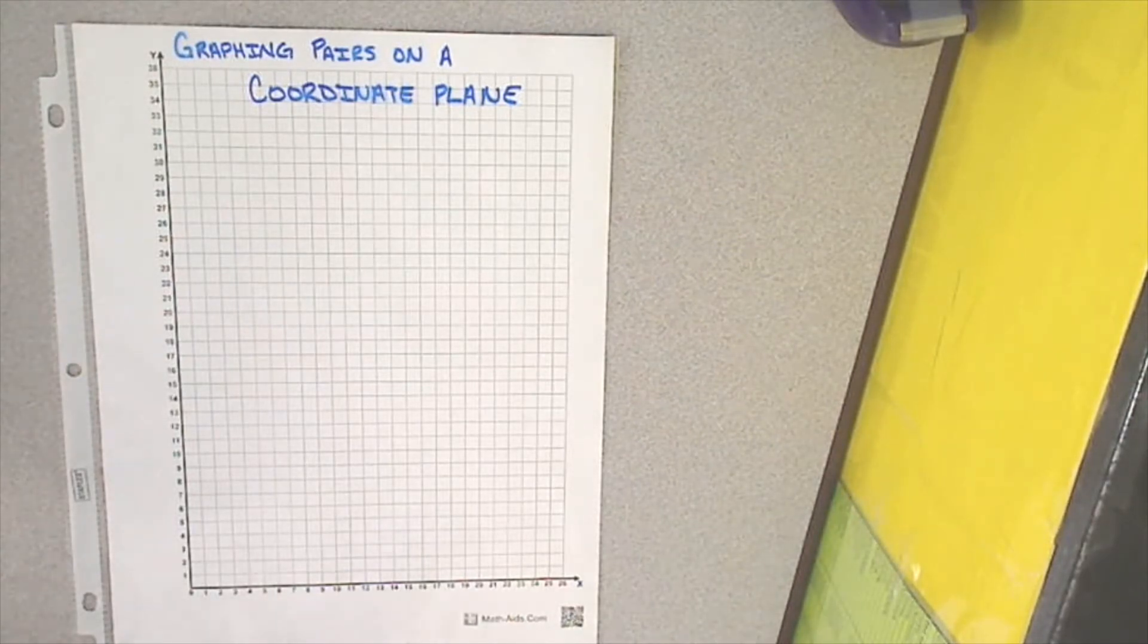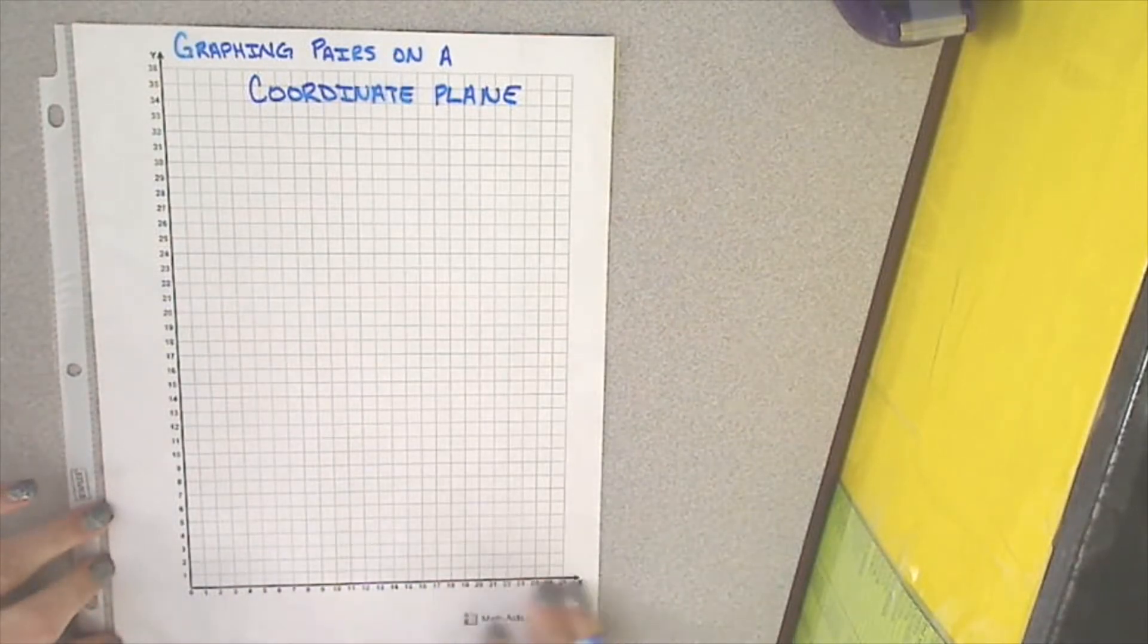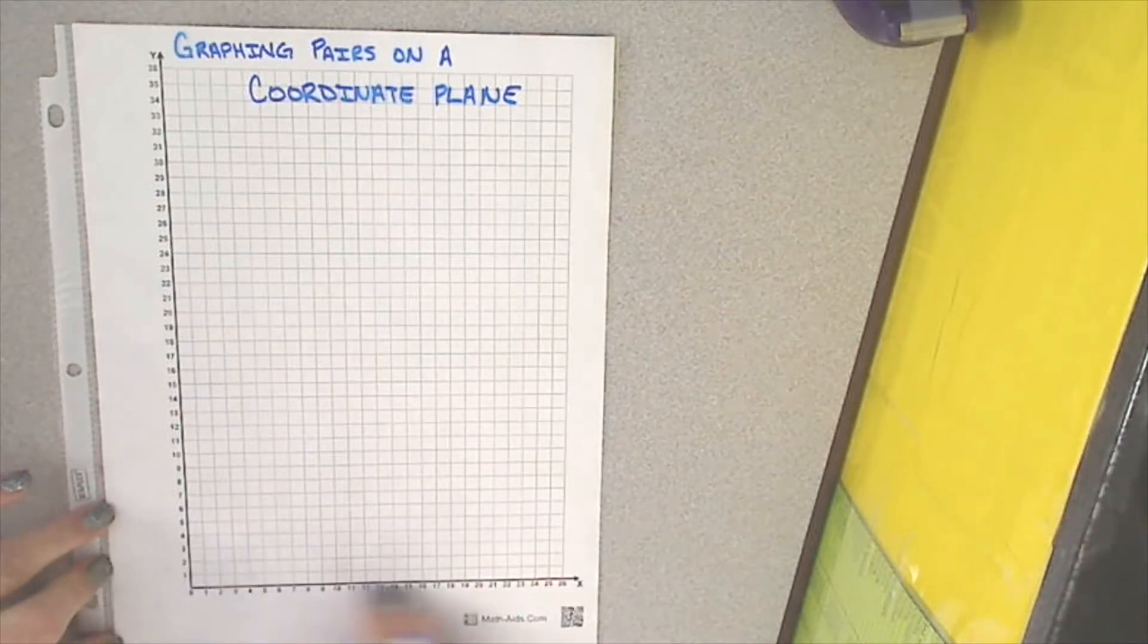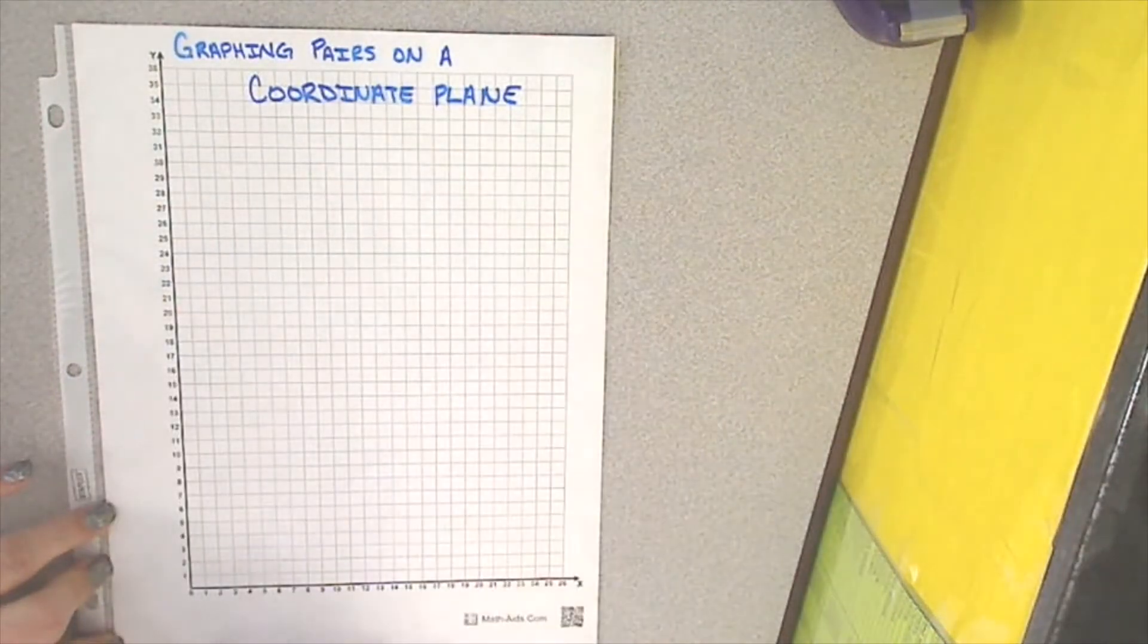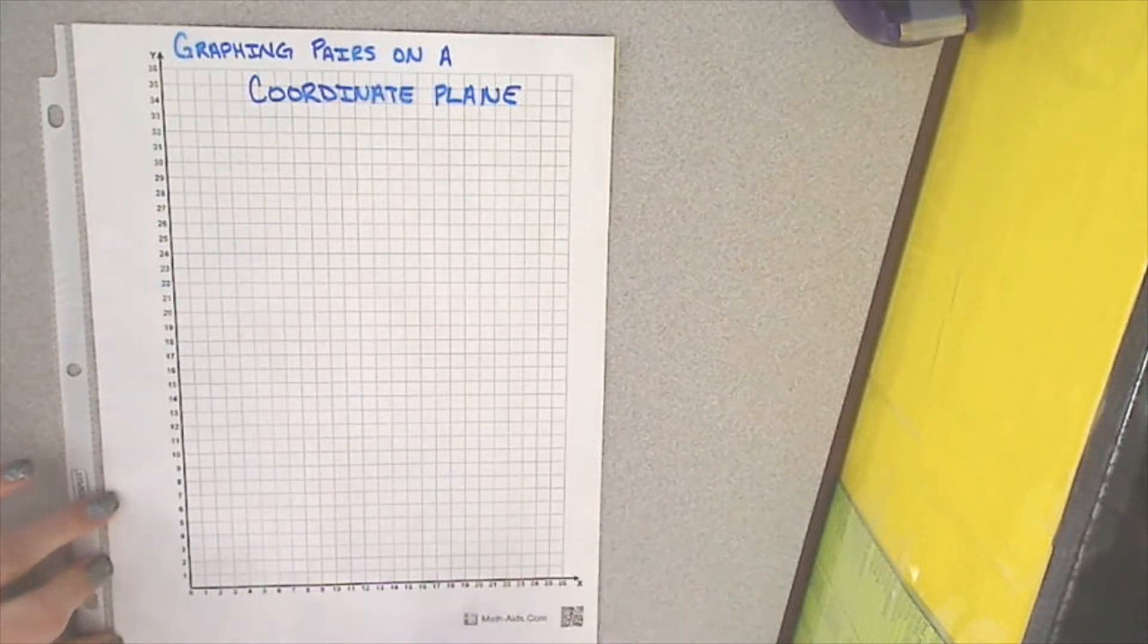So, the first thing we need to look at is we need to know the x and y axis, because without knowing what is what, you're going to get very confused. So, the x-axis is always the horizontal line. No matter where it's at, the horizontal line could be at the bottom, the top, or in the middle. Wherever this horizontal line is, that is your x-axis.